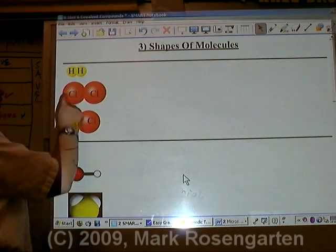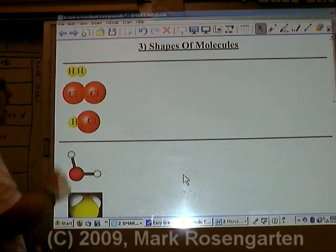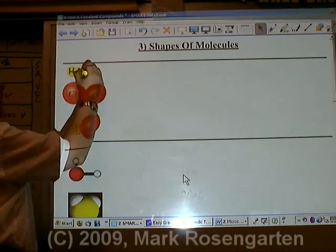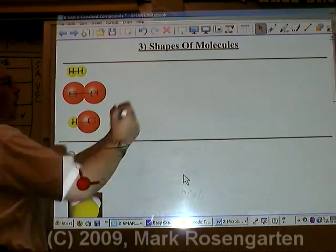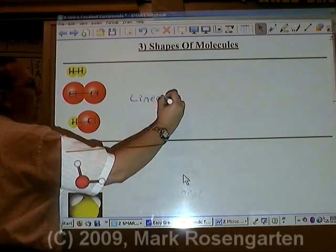The simplest shape is if you have a molecule made of two atoms. The atoms are arranged in a straight line. Therefore, it's called a linear molecule.